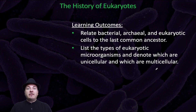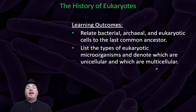By the end of this video, you should be able to relate bacteria, archaea, and eukaryotic cells to the last common ancestor, and list the types of eukaryotic microorganisms, and denote which are unicellular and which are multicellular.